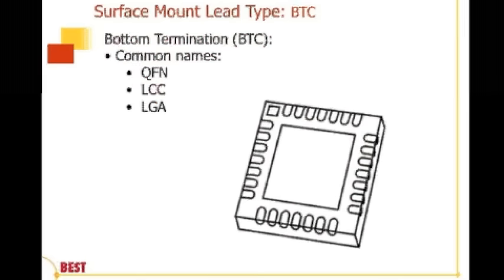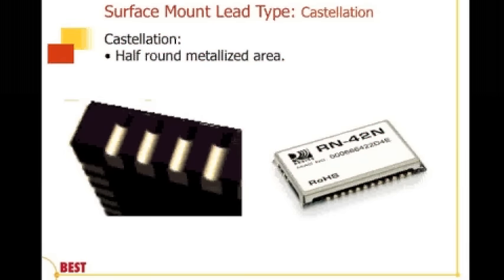We also have leadless devices known by the acronym BTCs, or Bottom Terminated Components. Some common names you'll see — this is the most common package style in terms of number of placements, primarily for handheld devices — are QFNs, LCCs, and LGAs. Then we have castellated terminations, which are half-round metalized areas. You'll see on the left-hand side that the metalization comes through — that's where the solder fillet is going to ride up into and make contact with the metalization of the component down to the board.